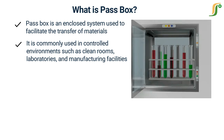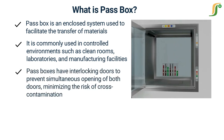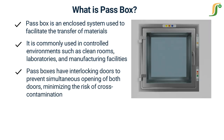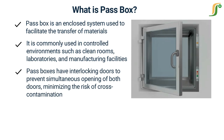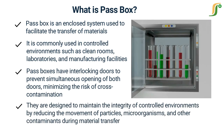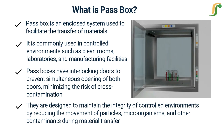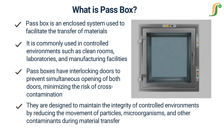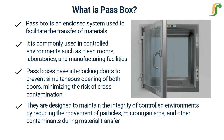Pass boxes typically have interlocking doors to prevent simultaneous opening of both doors, minimizing the risk of cross-contamination. They are designed to maintain the integrity of controlled environments by reducing the movement of particles, microorganisms, and other contaminants during material transfer.